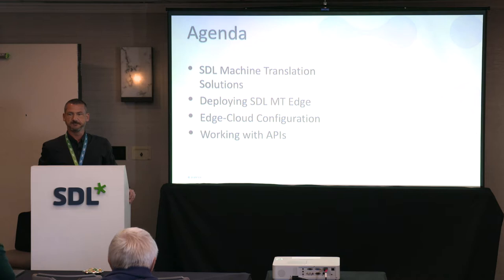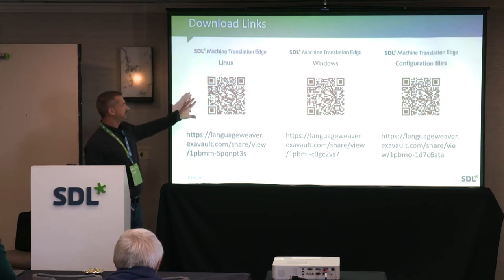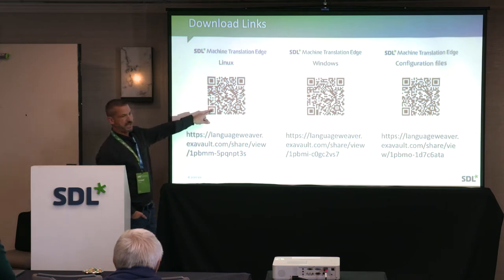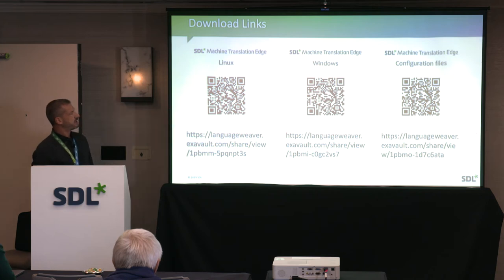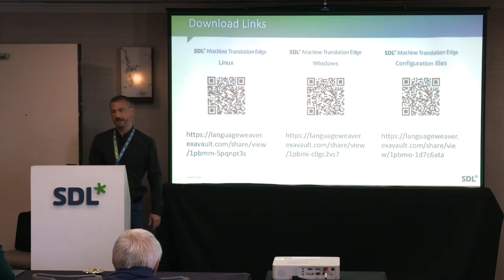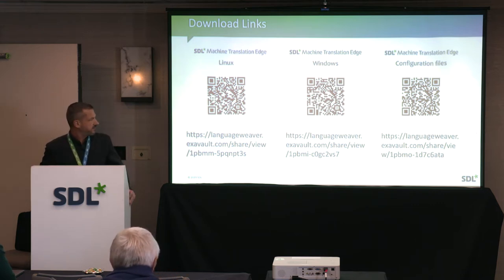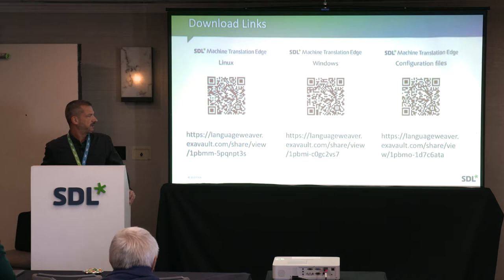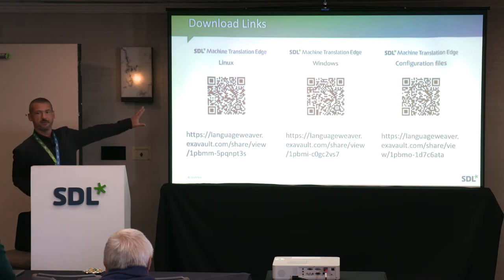If you want to do it yourself, you can download the Linux or Windows version of machine translation Edge. I prepared some links and QR codes so you can use your mobile phone to get them. I also prepared a QR code to download the configuration files we're going to use. There is a license you'll be able to use to enable Edge and connect it — the account is valid until the end of this week.